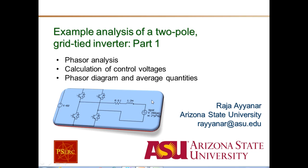In this video, we will look at an example of calculating the control voltages required in steady state to achieve various power flow specifications. We will do this by the method of phasor analysis and finally represent each of these phasors in a phasor diagram, correlating the phasors with their corresponding time domain average quantities.